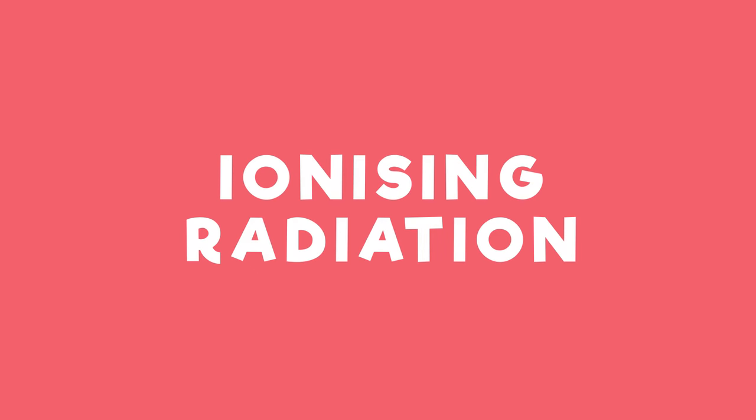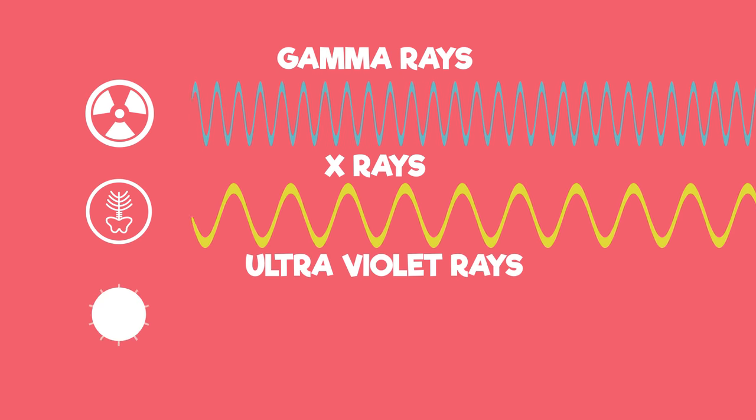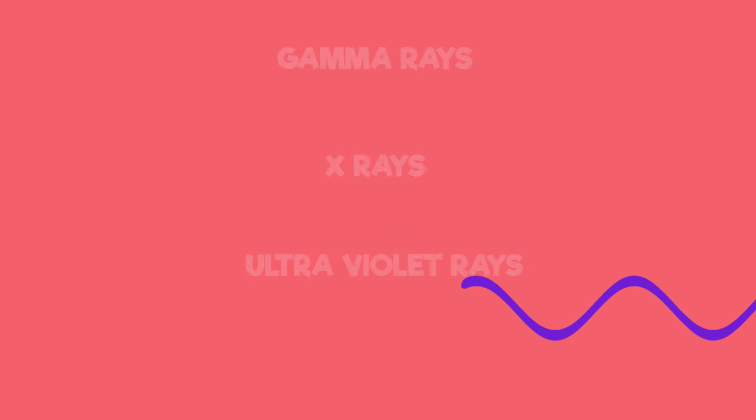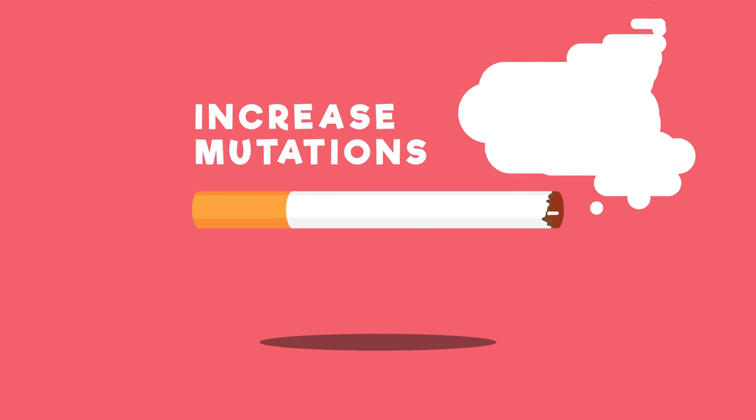In real life, exposure to ionising radiation, such as gamma rays, x-rays and ultraviolet rays, and some chemical mutagens, like chemicals in tobacco, can increase the incidence of mutations.